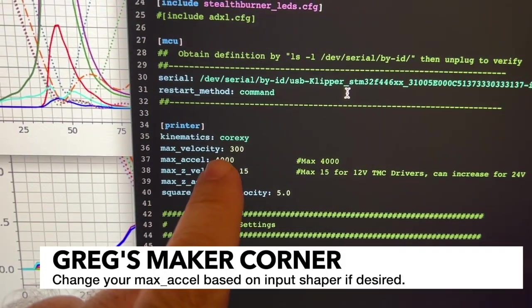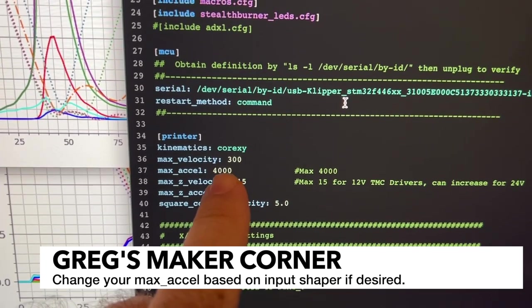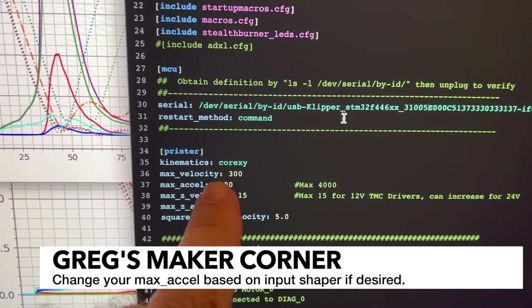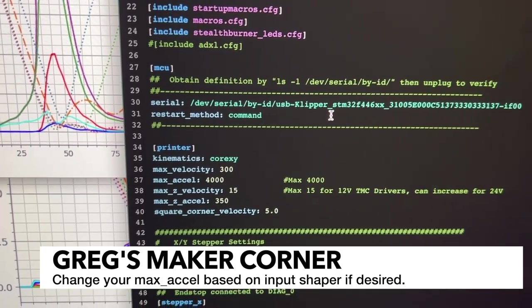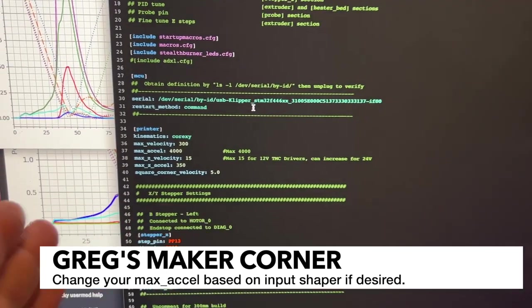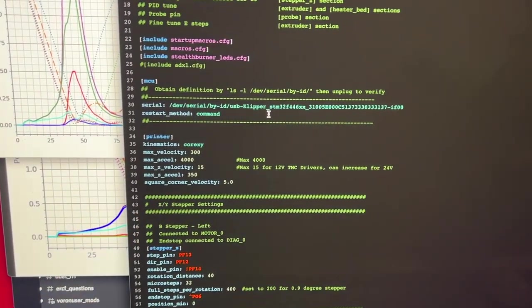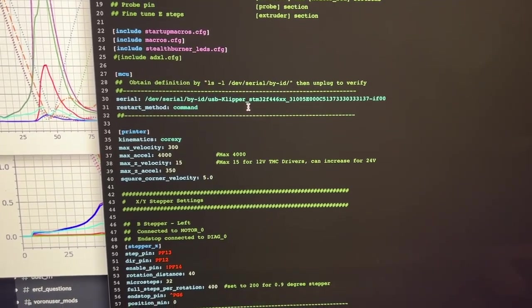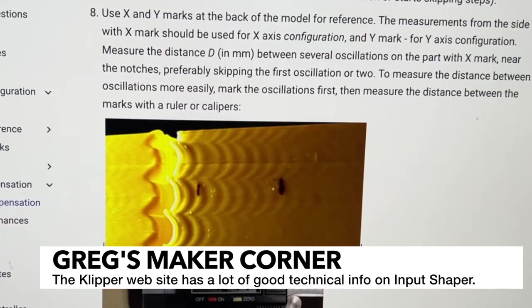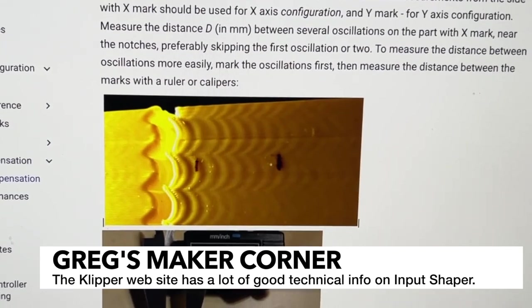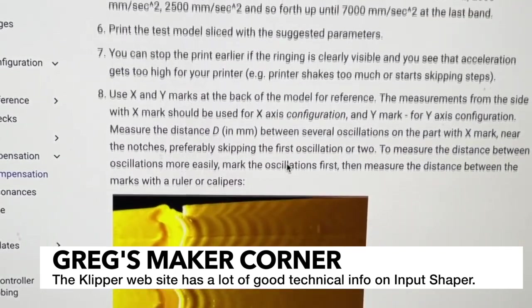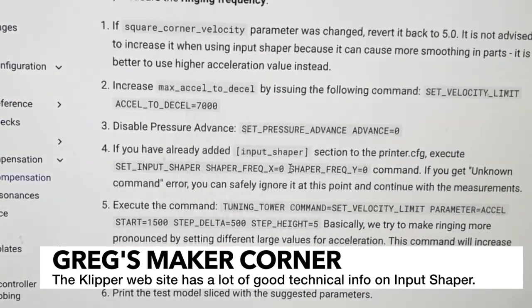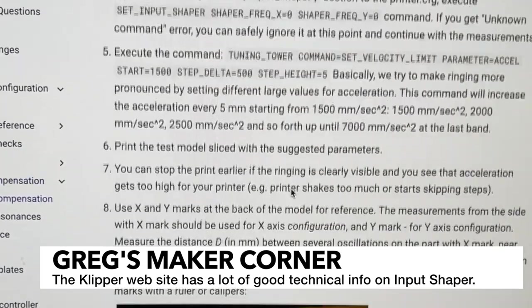The default file I was using only had it set to 4000 so I can probably go I'm thinking probably five to six thousand and I'll be fine. And that's going to make everything move a little bit quicker but it'll allow you to print a lot faster and without having issues where you get ghosting and other quality problems.